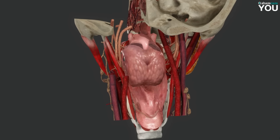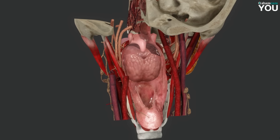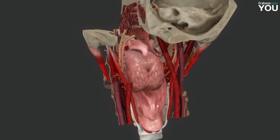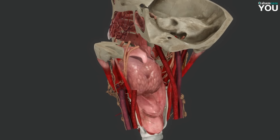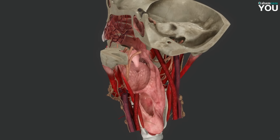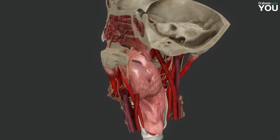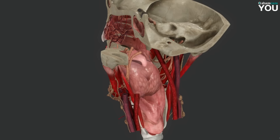Here we can see the swallowing mechanism taking place, observing that each time the windpipe, which is the entry to the respiratory system, is blocked by a flap of cartilage called the epiglottis. This is to ensure that food does not enter the larynx, and instead moves into the pharynx and onto the esophagus. Above the tongue we also notice the uvula, a small conical process of the posterior edge of the soft palate, which rises and closes the junction of the pharynx with the nasal cavity.